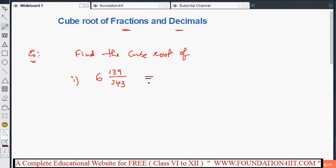If you convert into improper fraction, that is 343 into 6 and that product should be added with 139. Now that result is 2197. 2197 by again same 343.